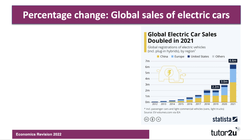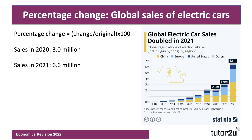Our first example is the market for electric car sales, and the data shown here is global car sales. They more than doubled in 2021 to 6.6 million — a staggering number of sales, with more than 3 million in China alone. What would be the percentage change in global car sales from 2020 to 2021? Press the pause button and have a go, then we'll work through it together.